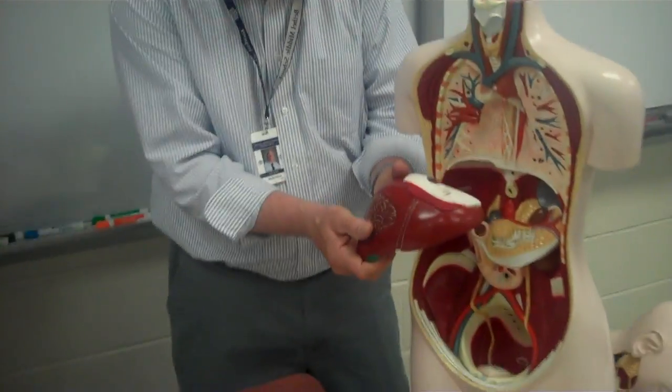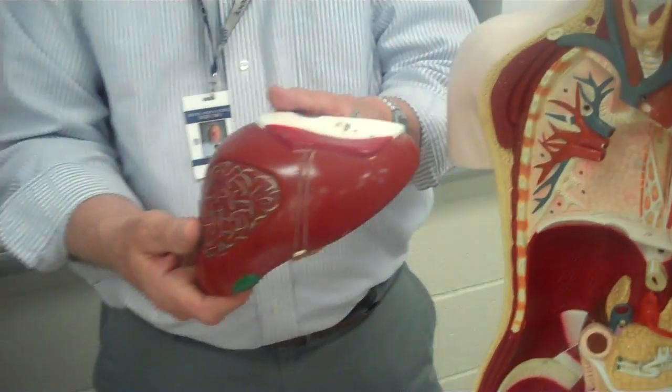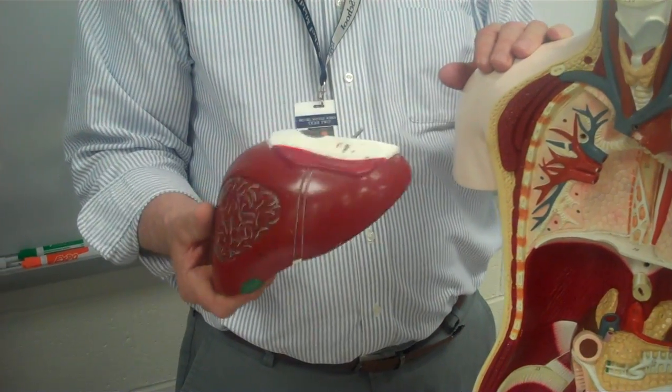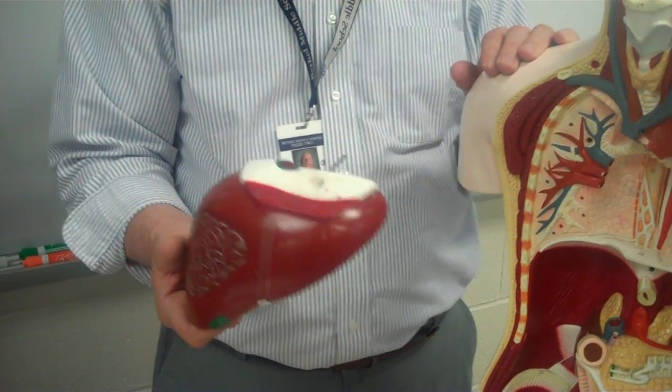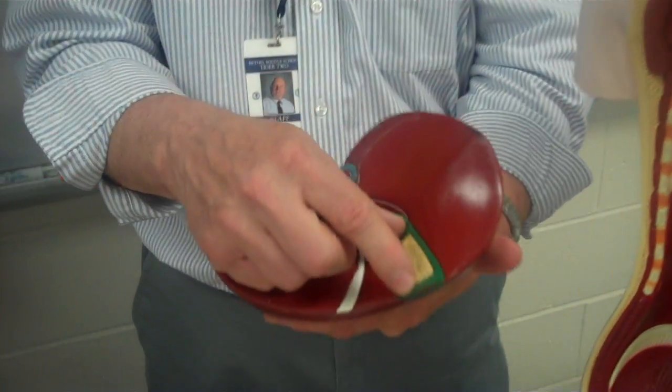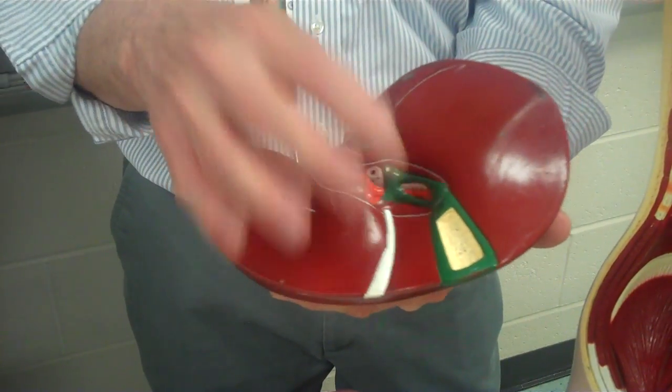Then there's the largest organ inside our body called the liver. And this is very important because it manufactures an important enzyme called bile, and bile is responsible for breaking down fats. And attached to the liver is a little punching bag organ called the gallbladder, and it stores the bile.